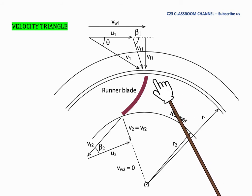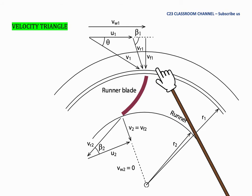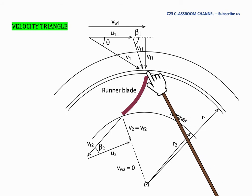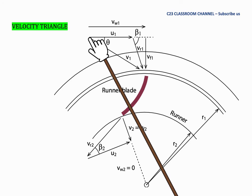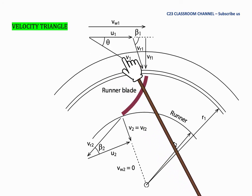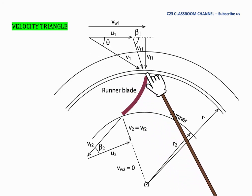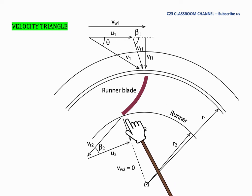And then we start our drawing with absolute velocity. So at the inlet here, we draw an absolute velocity V1 like this. And then at the outlet here, we draw absolute velocity V2 like this.